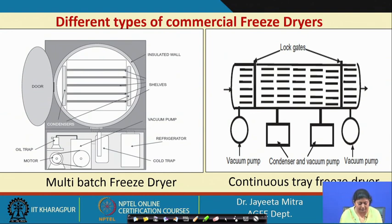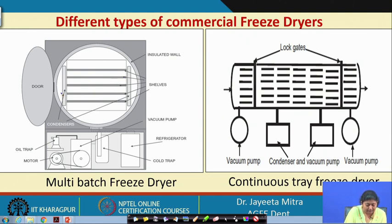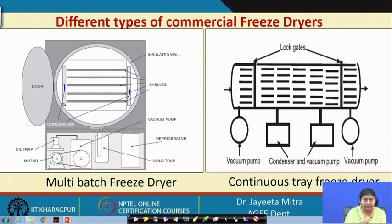Different types of commercial freeze dryer: the first is the multi-batch freeze dryer. It has insulated walls so that all heat supplied to the frozen layer is used for sublimation of ice to vapor, without heat leakage. These are the shelves. There is a condenser on both sides — as vapors come out they go to the condenser and form ice crystals. There is a vacuum pump oil trap, a motor, and a refrigerator serving two purposes: lowering the shelf temperature to bring the material to the freezing point, and keeping the condenser temperature low enough so vapor can be converted to ice.